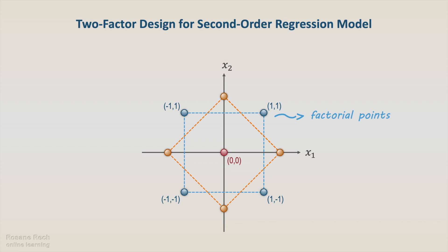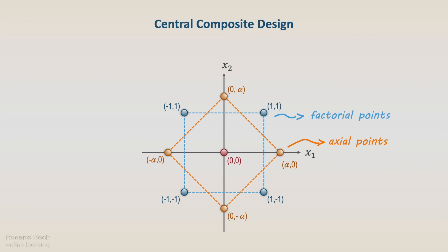The new experimental points are called axial points or star points, and their Cartesian coordinates are the combination of 0 and negative or positive alpha.